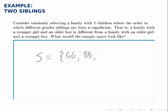Now we're told that the order matters, so having a girl then a boy is different than having a boy then a girl. So these are the four possibilities, and that's our sample space.